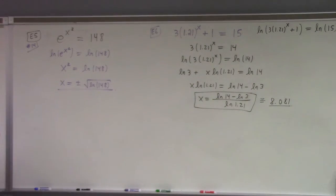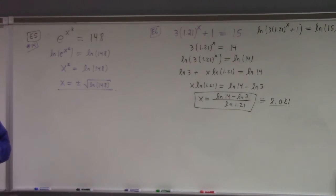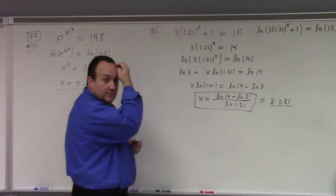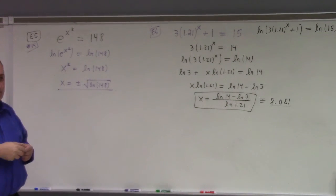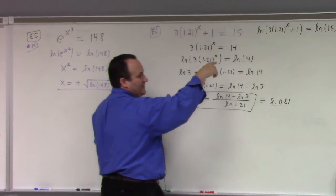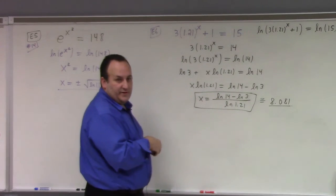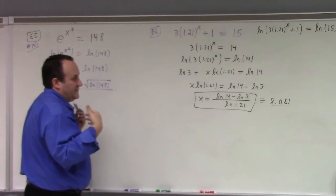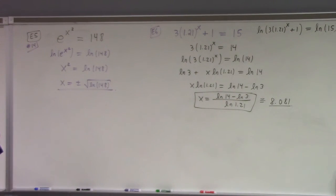You could also have divided both sides by 3 before taking the log — what happens then is you get log of 14 thirds in the next step. Log of 14 thirds is log 14 minus log 3, so it doesn't make a difference in terms of the answer.